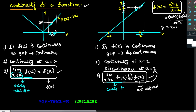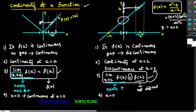Now let's check continuity at x = 0 for both graphs. For the first graph (modulus function) at x = 0: in the neighborhood of 0, is there any gap? No — so it is continuous at x = 0. For the second graph at x = 0: observe the neighborhood of 0 in its graph — there is no gap. So the second function is also continuous at x = 0, even though it is discontinuous at x = 2.